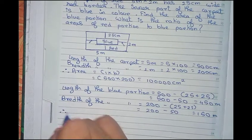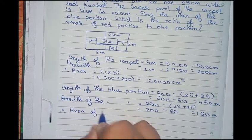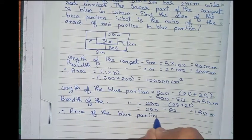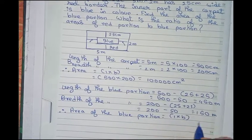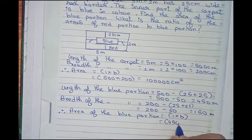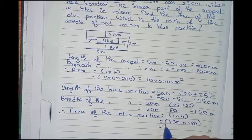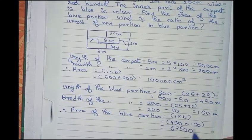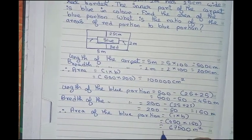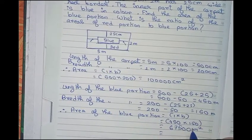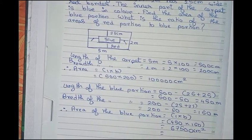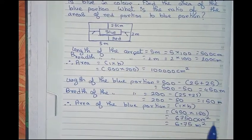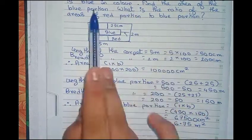Therefore, the area of the blue portion equals length into breadth, equals 450 into 150, that is 67,500 centimeter square. You can convert it into meter square, so it will be 6.75 meter square. So this is our first answer — the area of the blue portion.